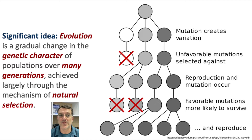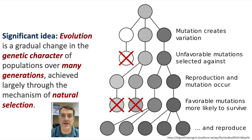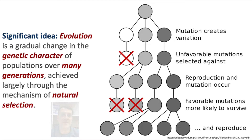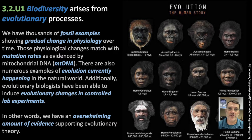First up, evolution is a gradual change happening over many, many generations. It is a genetic change that leads to changes in physical appearance, or the phenotype of an organism, driven by a process called natural selection. This is Darwin's big idea, originally published in The Origin of Species in 1859.